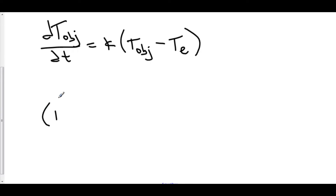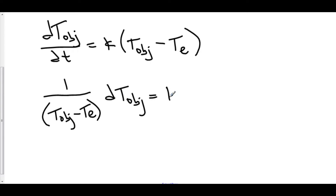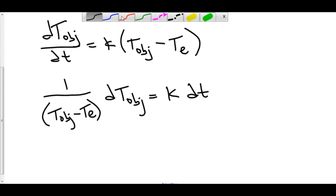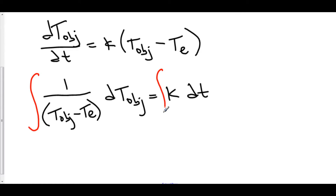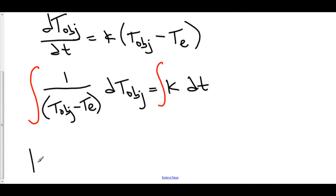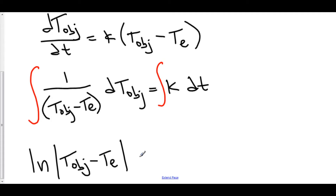We have 1 over T-object minus T-environment times dT-object is equal to k dt. To get rid of dT-object and dt, we integrate both sides. The anti-derivative of 1 over our function value minus some constant comes out to be the natural log of the absolute value of T-sub-object minus T-sub-environment, plus c. The anti-derivative of k dt is just kt, and we put our plus c on that side.